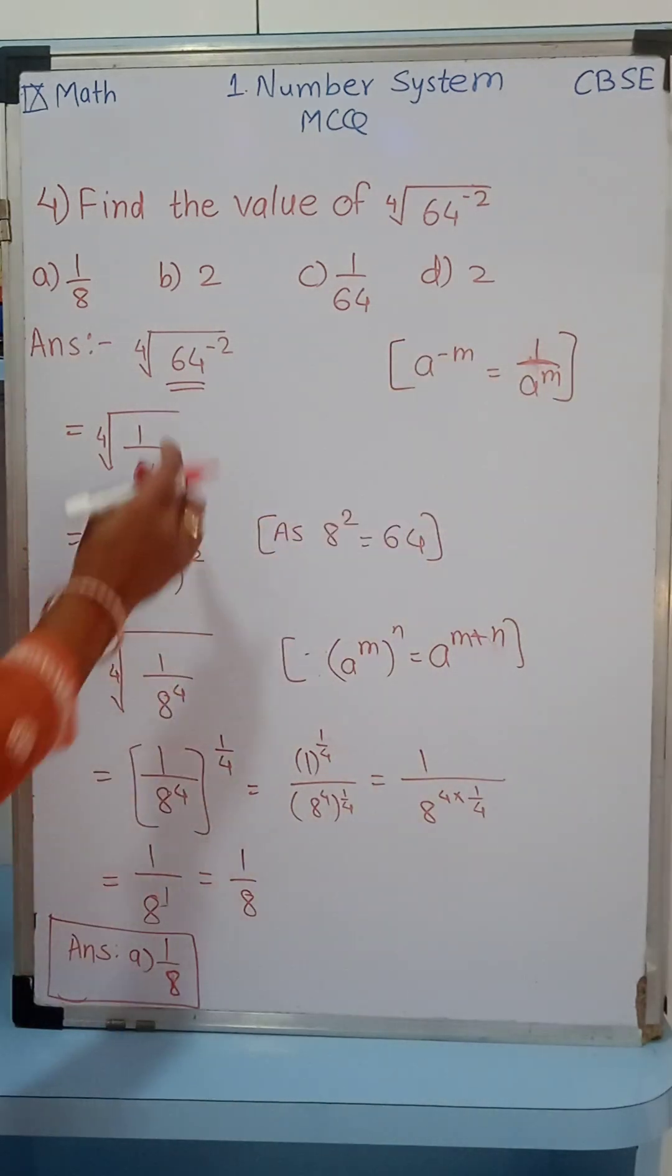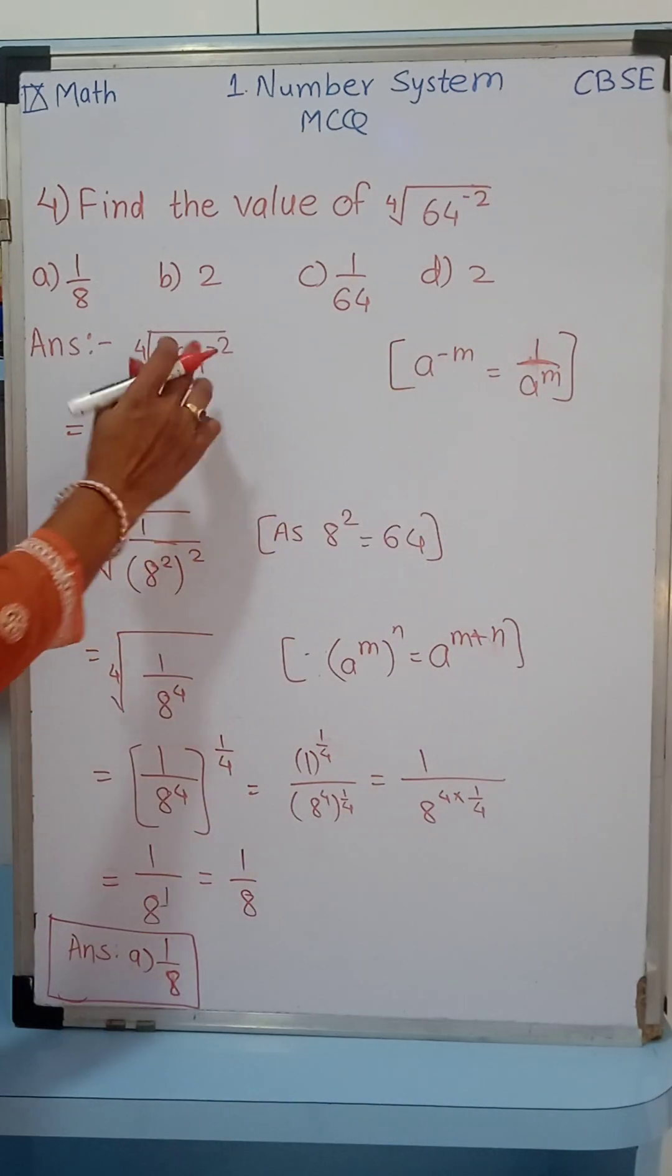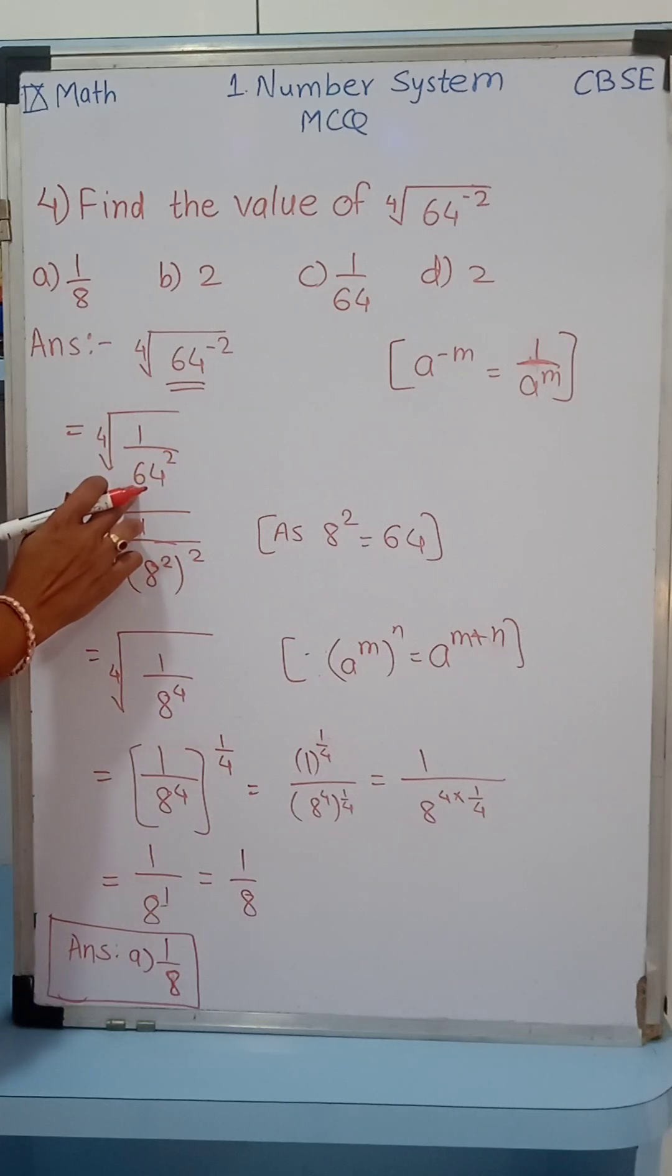As we have 64 raised to minus 2, it will be shifted to the denominator, the power will become positive. So this is the fourth root of 1 over 64 raised to 2.